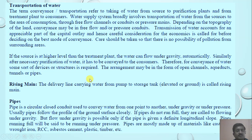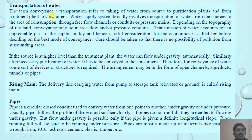Regarding the transportation or conveyance of water: the term conveyance refers to taking water from the source to purification plants and from the treatment plant to consumers. The water supply system broadly involves transportation of water from sources to areas of consumption through free flow channels, conduits, and pressure mains. Depending on the topography of the land, conveyance may be either free flow or pressure conduits. Transmission of water accounts for an appreciable part of the capital outlay, and hence careful consideration of economics is needed before deciding on the best mode of conveyance.